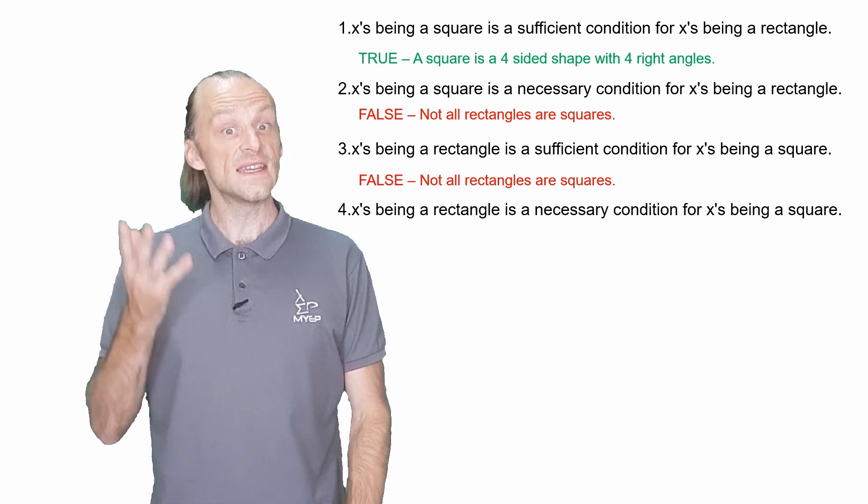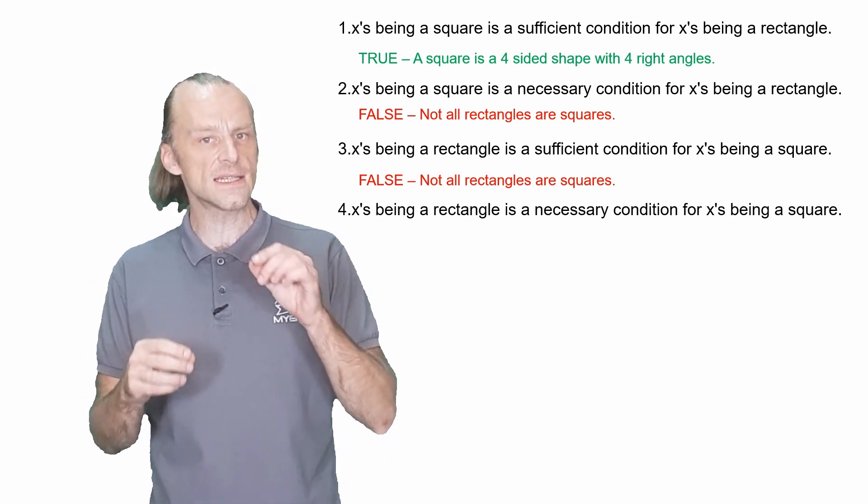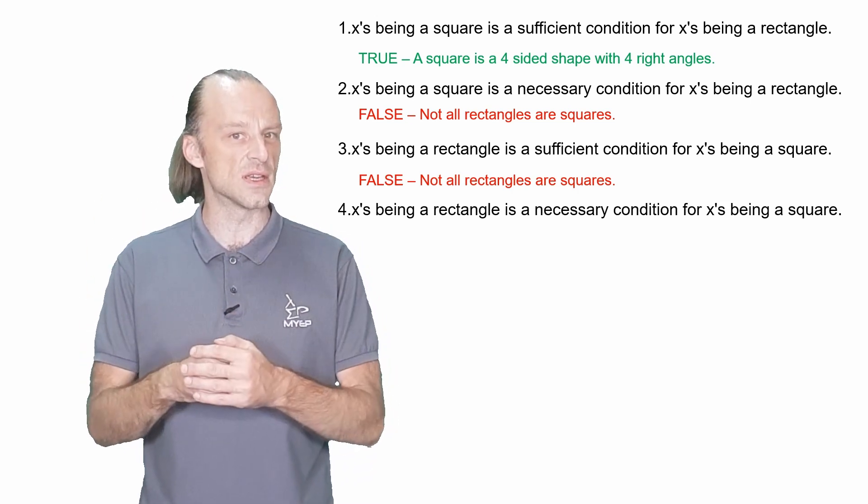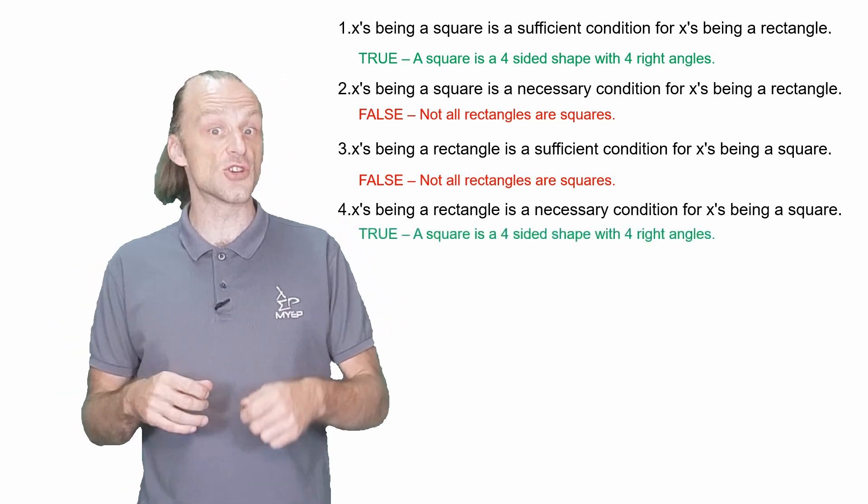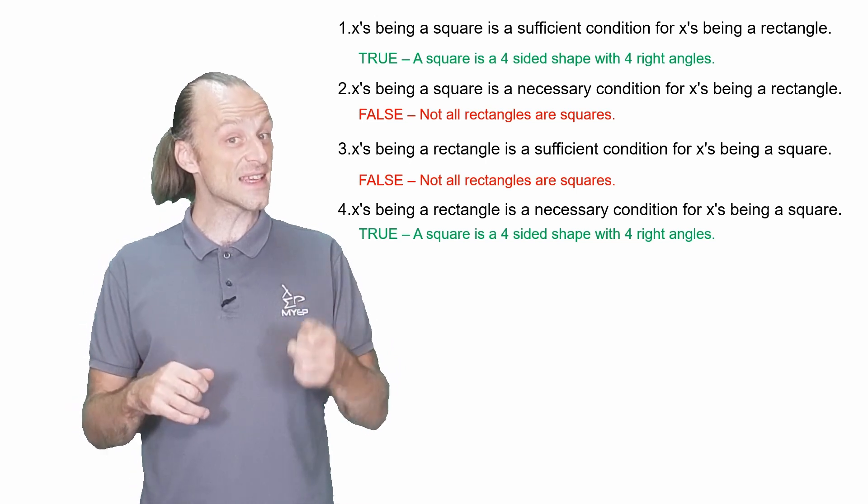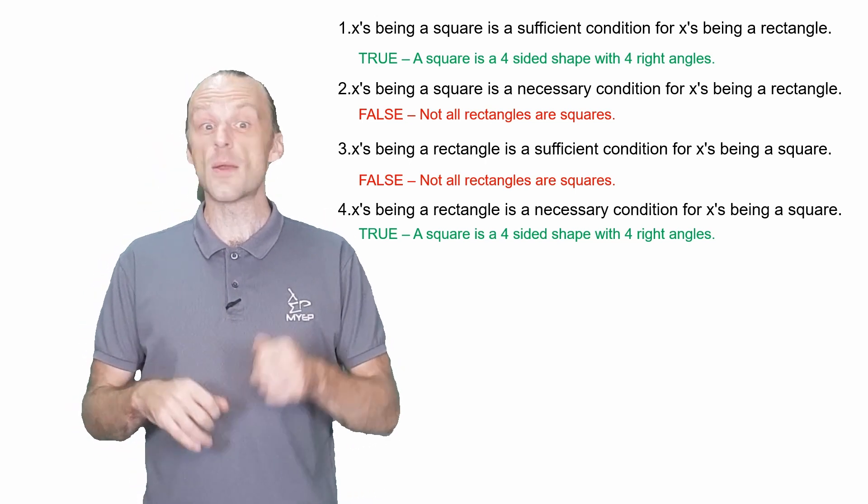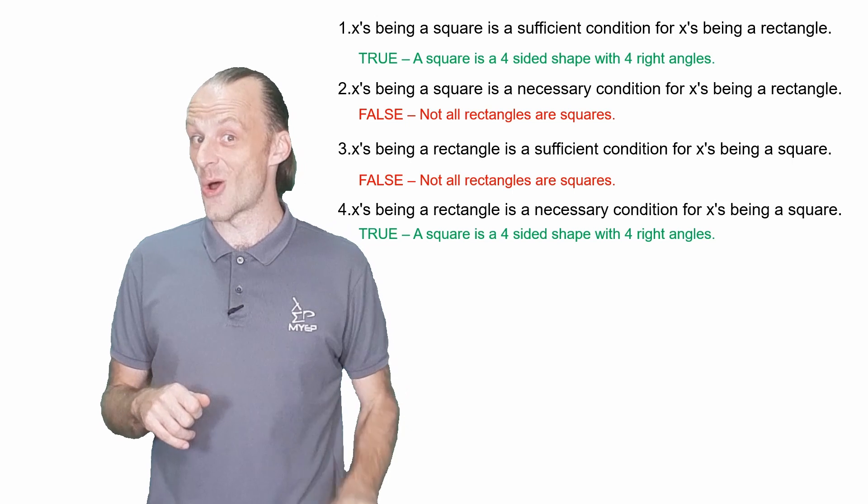Finally, in number four, is X being a rectangle a necessary condition for X being a square? This will be true. We saw above that all squares meet the definition of a rectangle. So if X is not a rectangle, then we can guarantee that it's not a square.